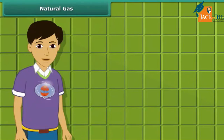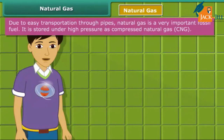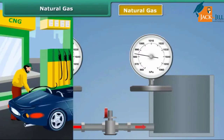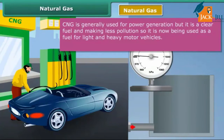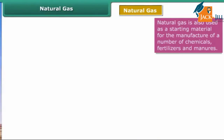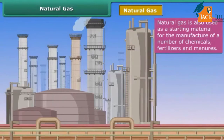Natural gas, also known as compressed natural gas or CNG, is stored under high pressure. CNG is generally used for power generation, but due to being less polluting it is also being used as a fuel for vehicles. It is also used for cooking purposes, and as a base material for the manufacture of a number of chemicals and fertilizers.